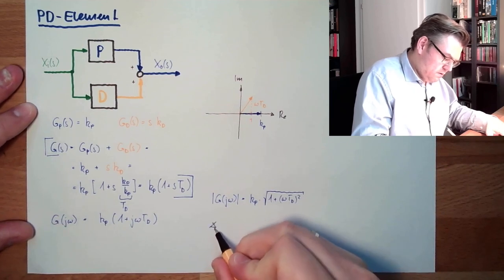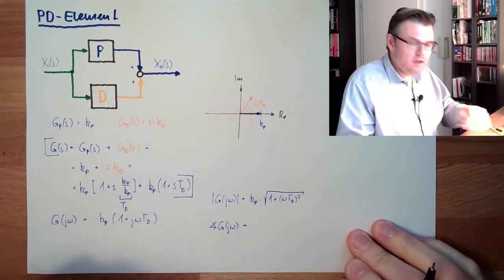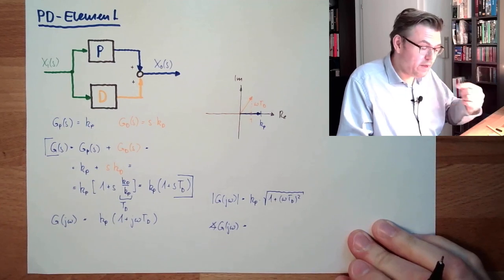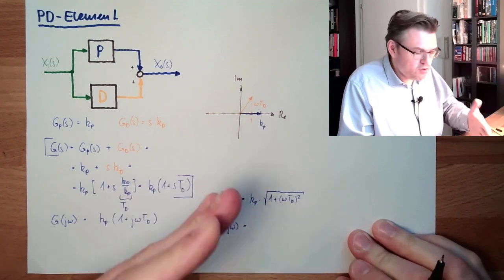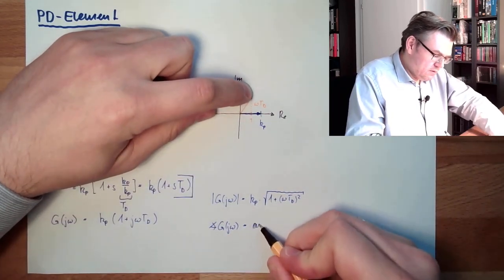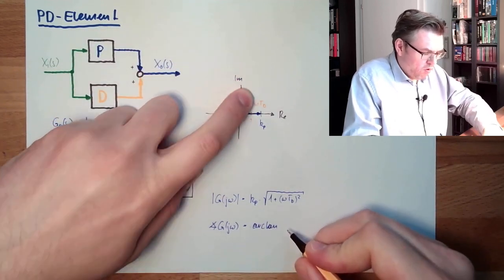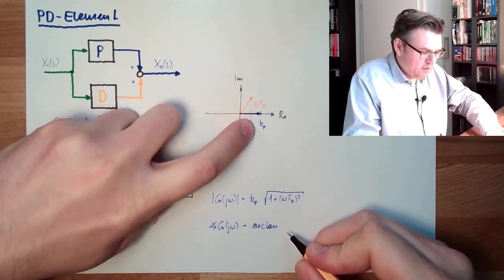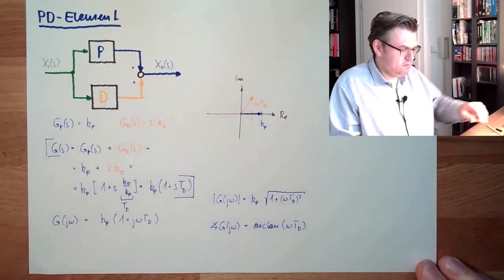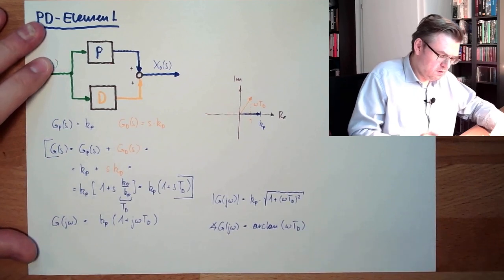The argument is the sum of the two angles. For multiplication, two angles need to be added. The first angle is zero, so zero plus arctan(omega·tt / 1), which is arctan(omega·tt). These are the two values for the frequency response.